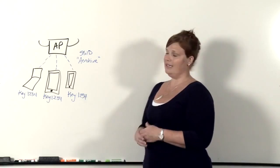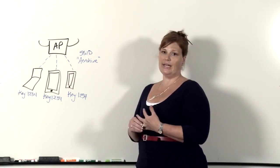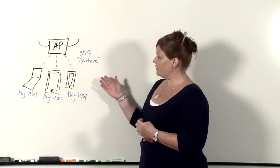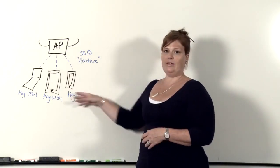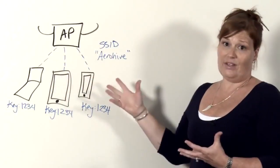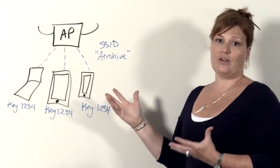While a pre-shared key is the easiest method to connect users to the network, there are a few problems with this type of configuration. The first one being when everybody uses the same key to connect to the access point, they can actually, if they turn on a sniffer, see each other's traffic.